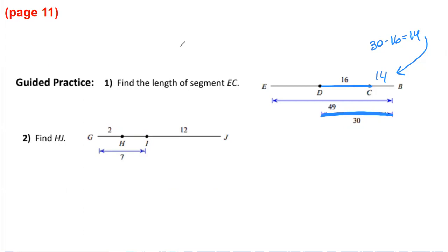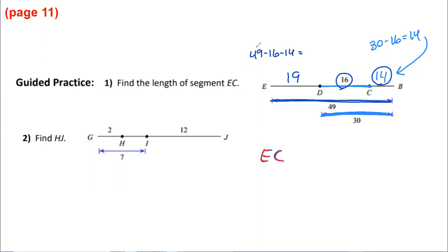Now the entire segment has a length of 49. We know that DC is 16 and the other part is 14, so to find ED we do 49 minus 16 minus 14, which gets you 19. Now EC is ED plus DC — that's 19 plus 16 — which gives you 35. So the length of EC is 35.